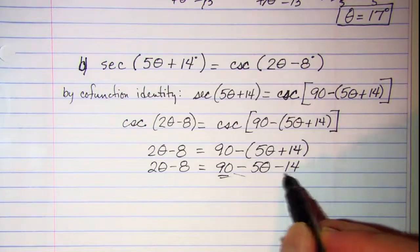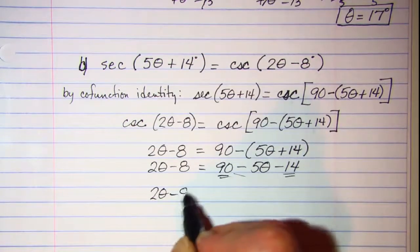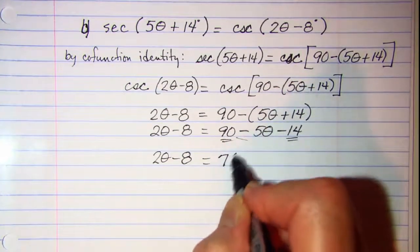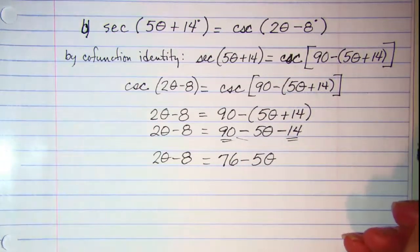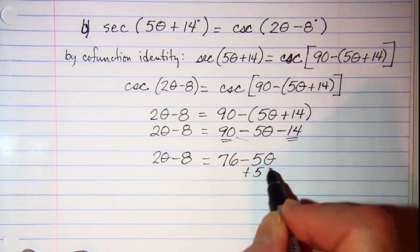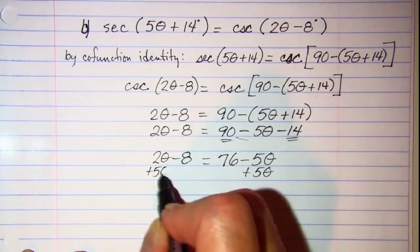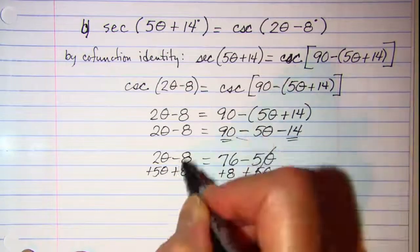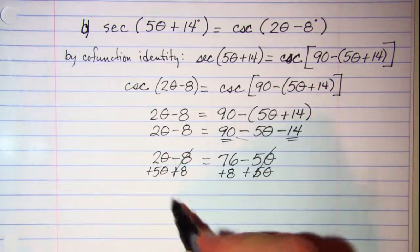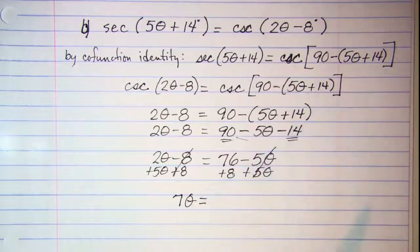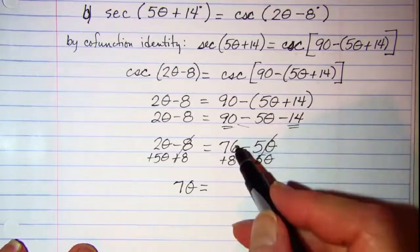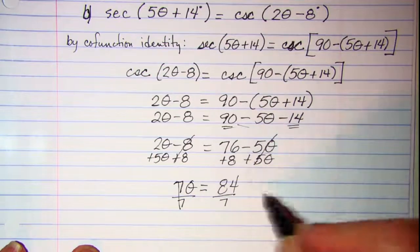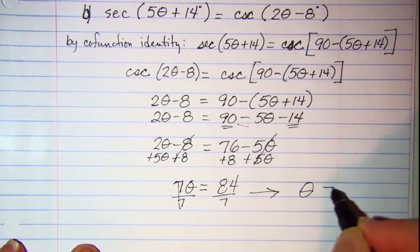Setting the arguments equal: 2 theta minus 8 equals 90 minus (5 theta plus 14). Distributing the minus sign gives 2 theta minus 8 equals 90 minus 5 theta minus 14, which combines to 2 theta minus 8 equals 76 minus 5 theta. Adding 5 theta to both sides and adding 8 to both sides gives 7 theta equals 84. Dividing both sides by 7, theta equals 12 degrees.